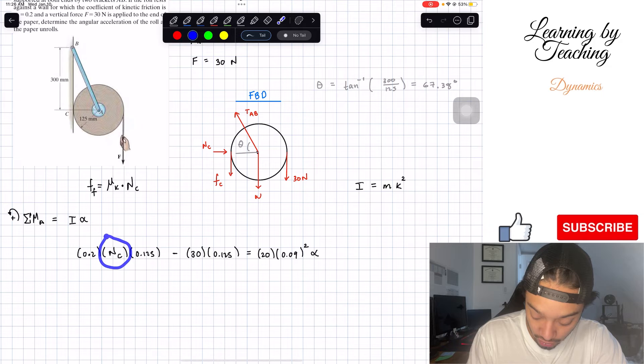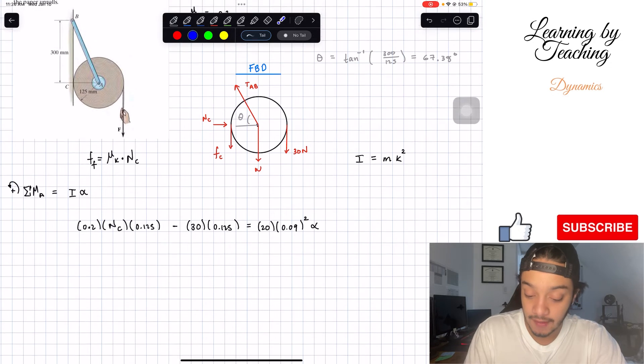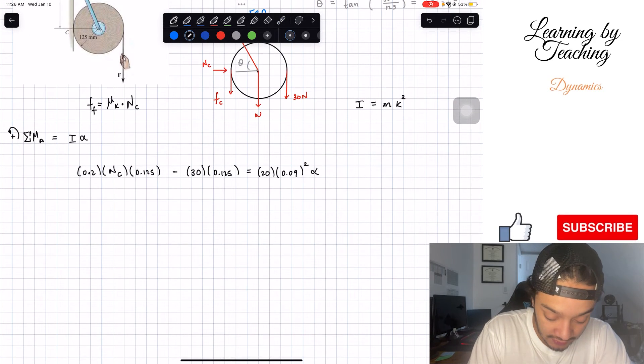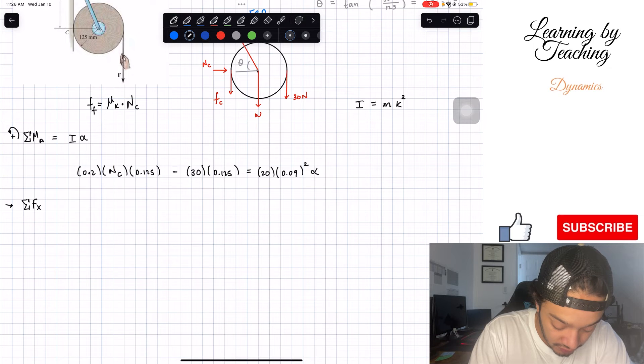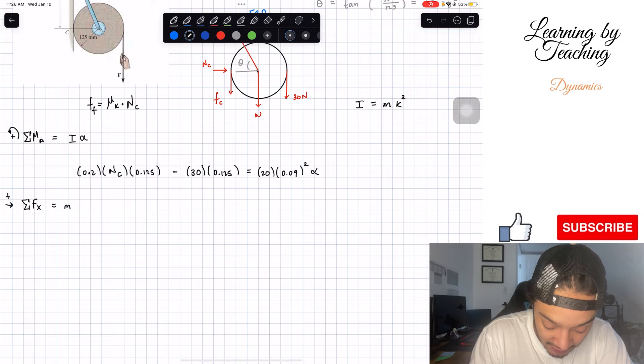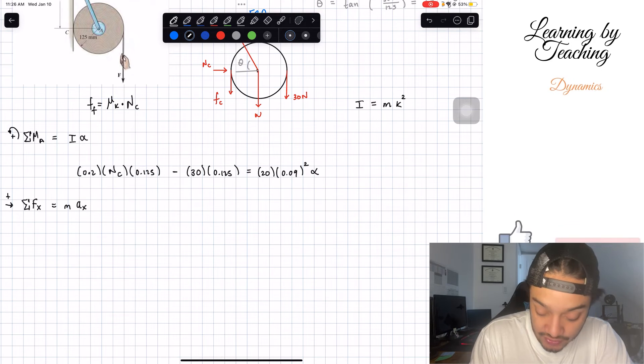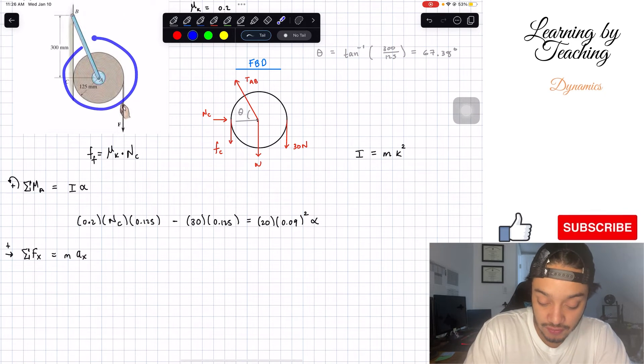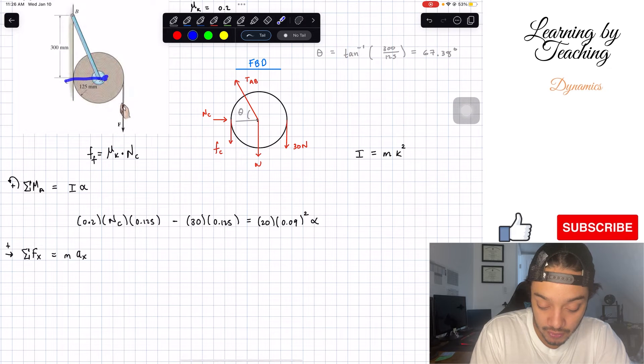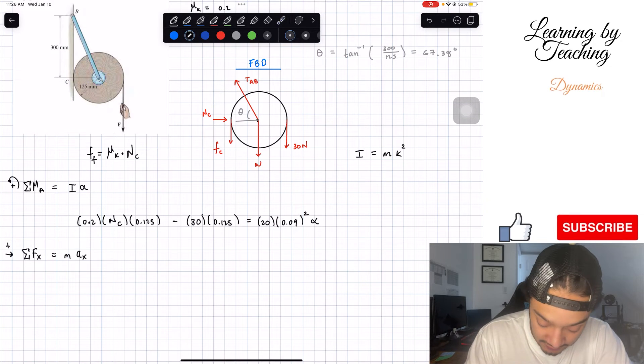We have our guy that we want to find. However, we have another variable that we don't know. Because of that, we're going to go ahead and do a sum of our forces in the x direction. We're going to assume that going right is positive, and this should be equal to my mass times my acceleration in the x direction. Now, are we moving in the x direction at all in this problem? We're not. Therefore, this acceleration will always be equal to 0.